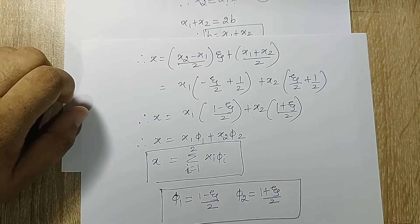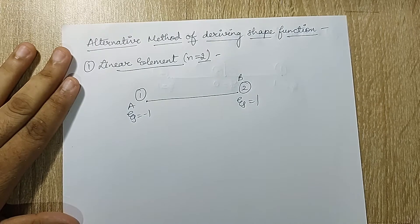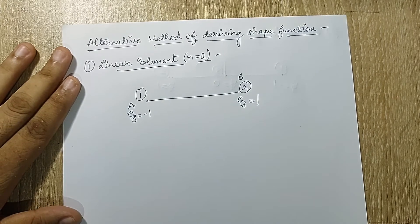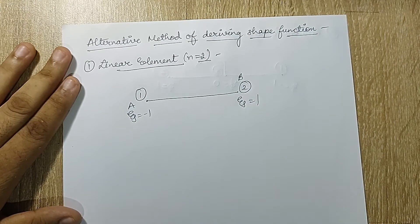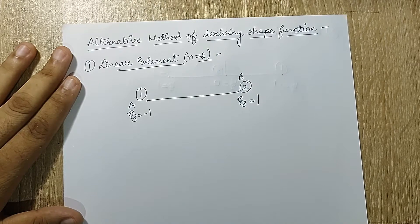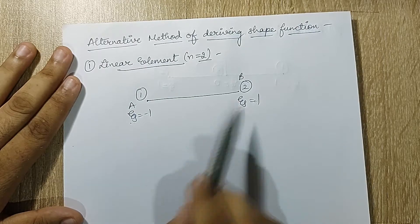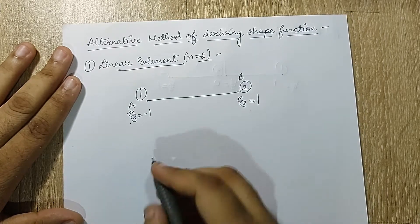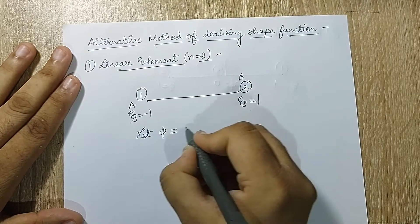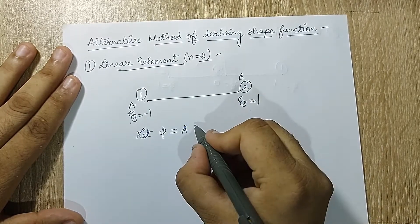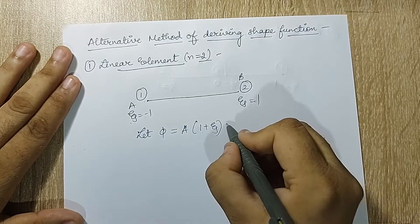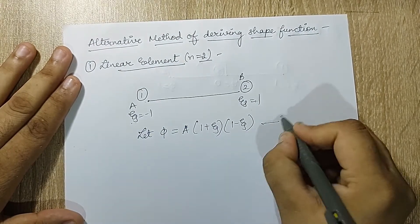Next we will talk about an alternate method of deriving shape functions — this is the same transformation approach but using the technique from method 2 in the previous session. For the linear element, n = 2 with nodes 1 and 2, where ζ = -1 at one end and ζ = +1 at the other. I write the shape function as φ = a·(1 + ζ)·(1 - ζ), where each node contributes a factor.